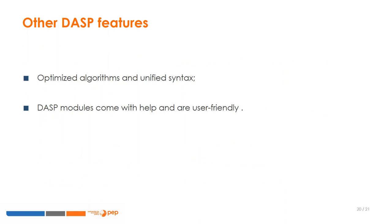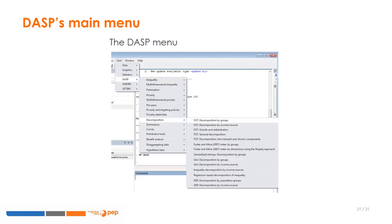DASP applies optimised algorithms for the estimation of distributive indices, and it unifies syntax and parameter use across various estimation procedures for distributive analysis. For each DASP module, three types of files are provided: the DASP file contains the program of the module, the HLP file contains the help material for the given module, and the DLG file allows the user to perform the estimation using the module's dialog box. Once installed, the DASP menu can be accessed through Stata's main menu under 'User', as illustrated here.